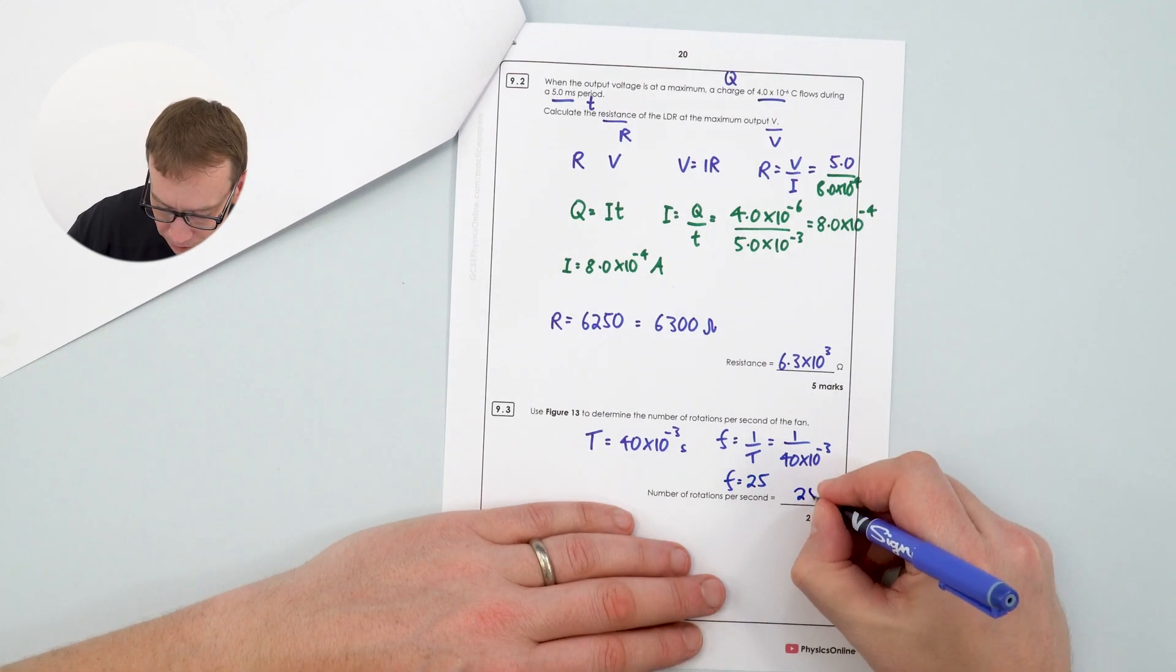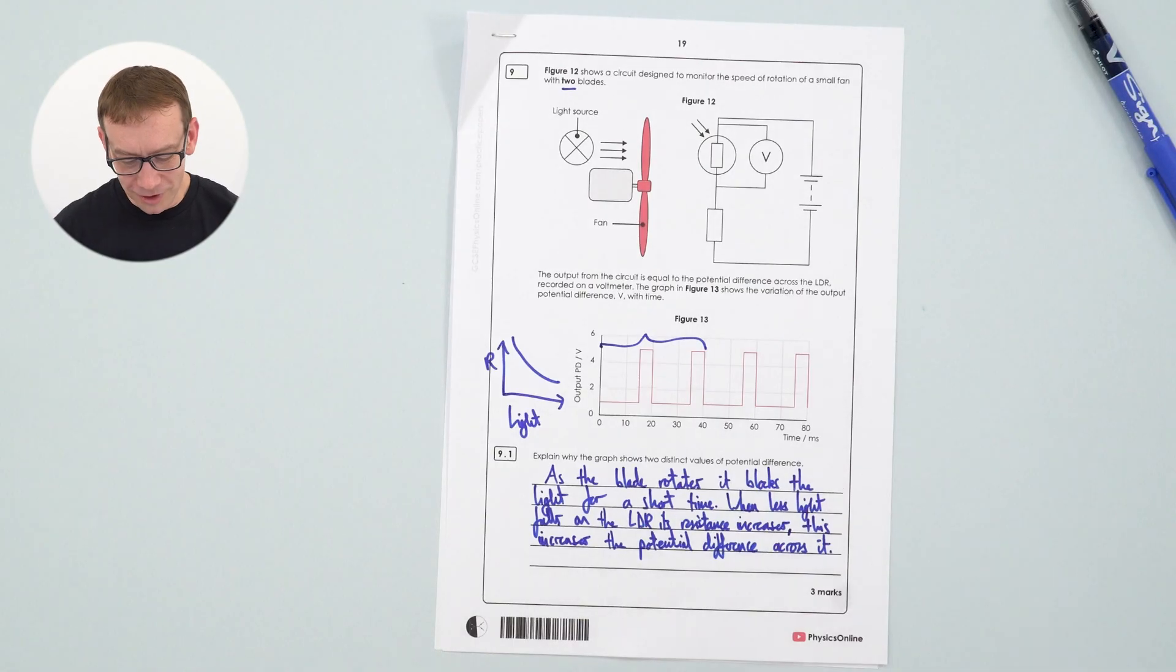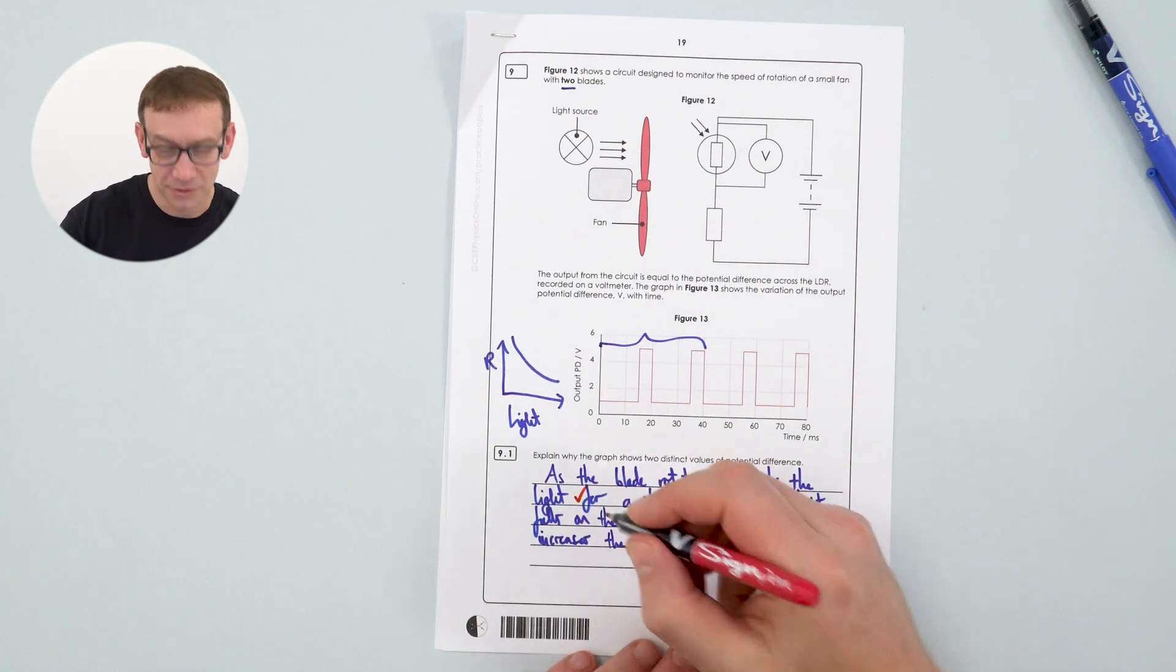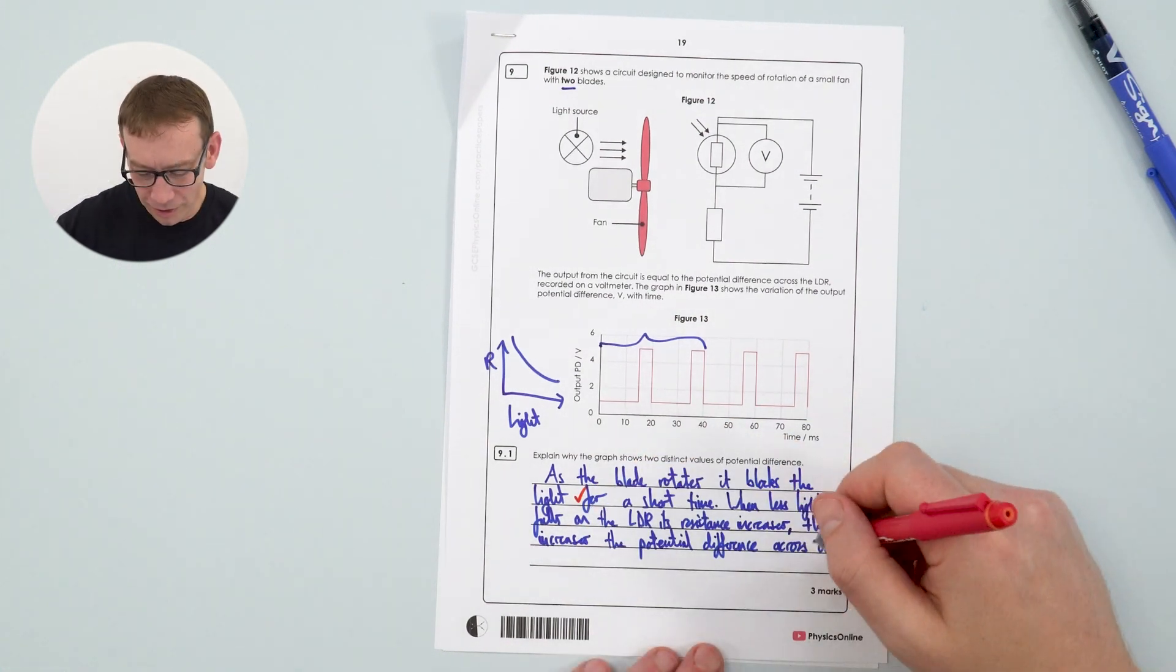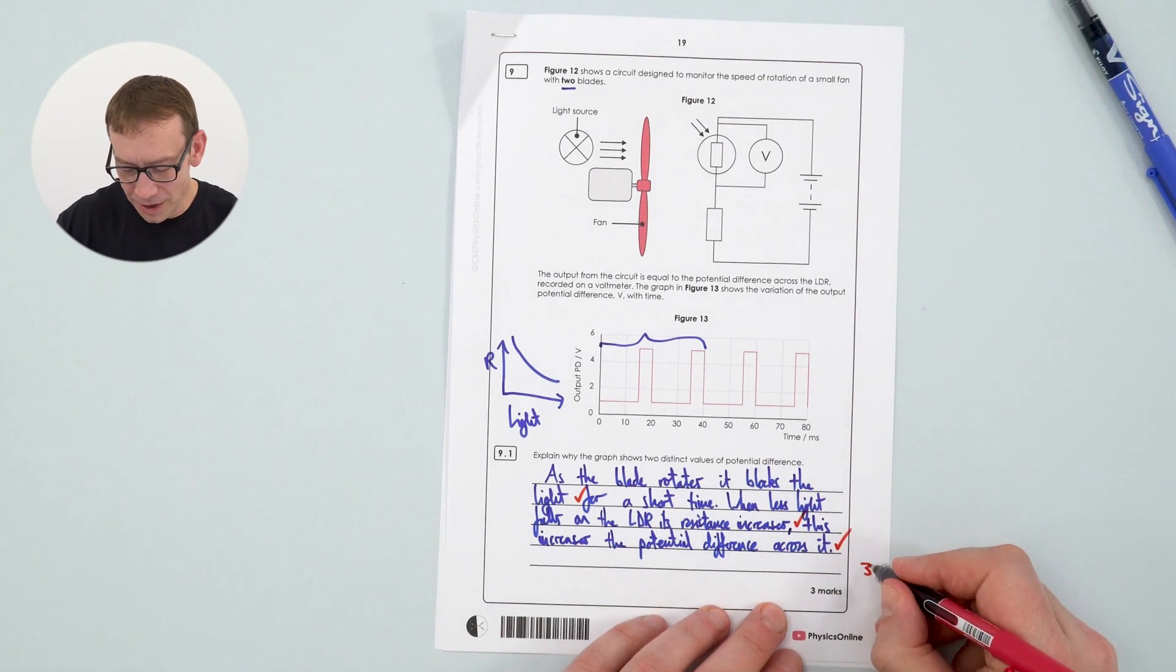So in one second, that fan blade rotates 25 times, which is kind of what you'd expect for a fan moving really quickly. So when it comes to actually doing past papers, I would say you always need to think, if you're not sure if you've got the correct answer, then mark it incorrect. Don't give yourself the benefit of the doubt. So looking at this, we've got the blade rotating, it blocks the light, so that's describing what's happening. When less light falls, its resistance increases, and that increases the PD across it, so I've got three marks there.